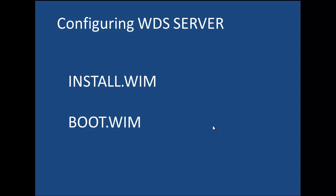That means you can use one boot.wim to deploy multiple install.wim files — look out for that question in your exam. The install.wim speaks for itself because it is the operating system. For example, if you want to deploy multiple copies of Server 2012, Windows 10, or Windows 8, you need to first get that install.wim file and add it to the WDS server.